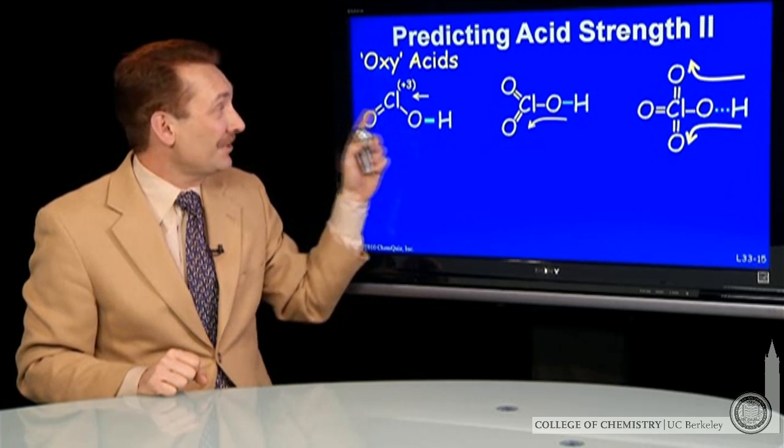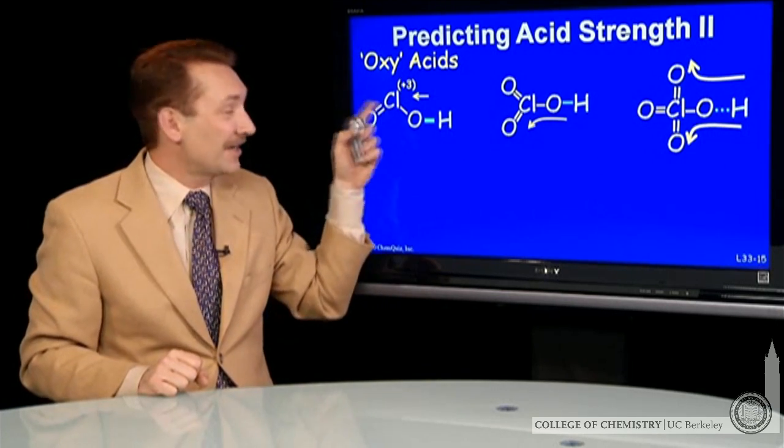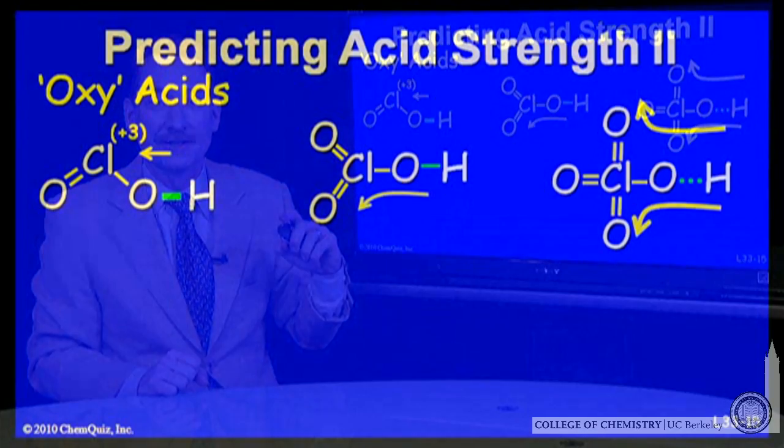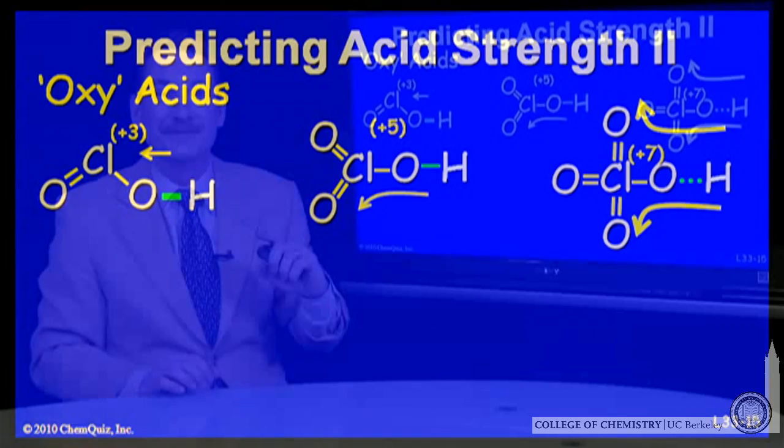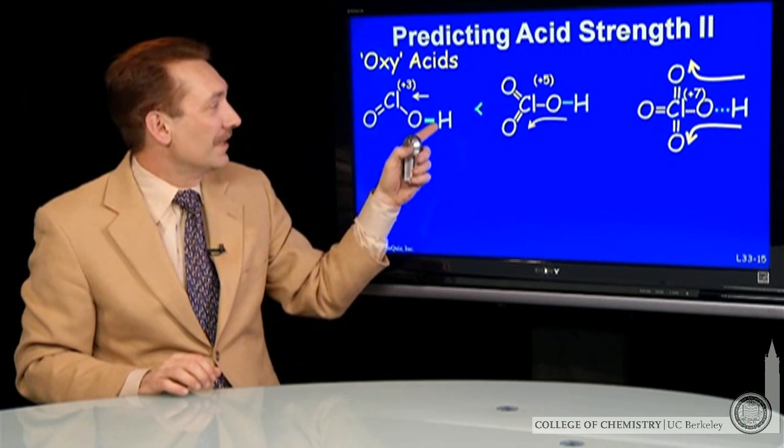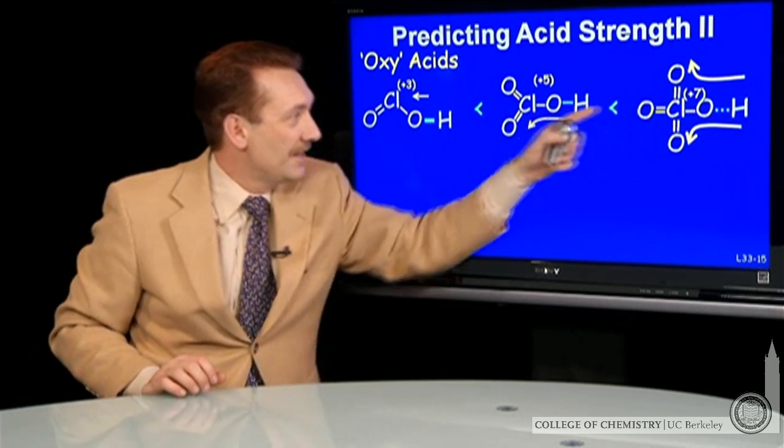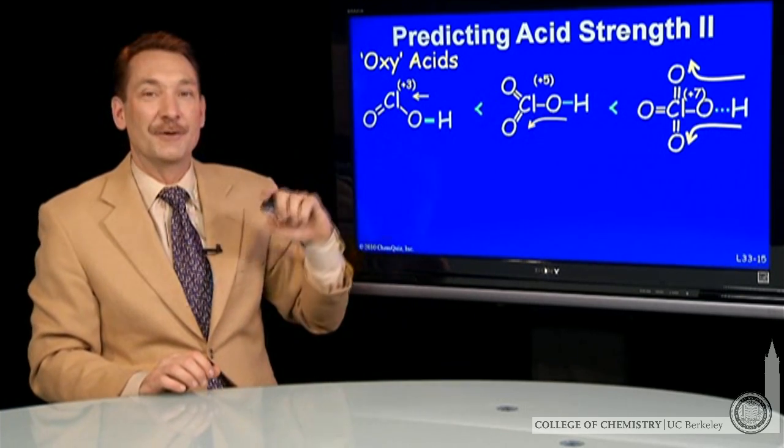Now, since I'm adding oxygens here, the oxidation number of chlorine is changing. So I can make the same correlation between oxidation number and acid strength. The higher the oxidation number in these chloroxy acids, the stronger the acid. So let's correlate these: the strongest acid, slightly weaker, slightly weaker.